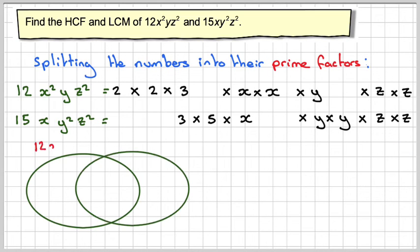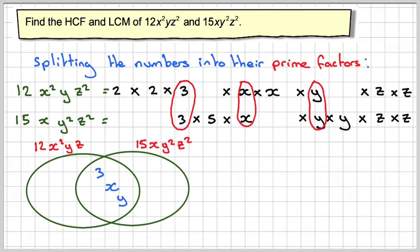Now normally I like to use a Venn diagram to split things to find the HCF and the LCM. The HCF is what's in the middle here and what's common to both. So what's common: we have a 3, we have an x, we have a y, and a z².